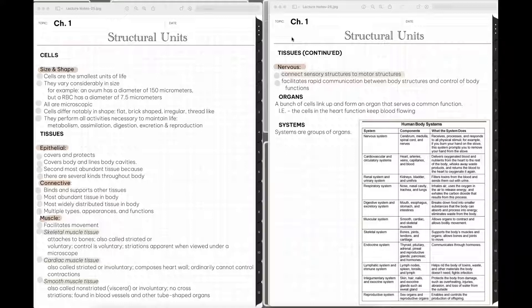Some basic information here over cells, their size and their shape. Cells, as you may remember from your high school biology class, are the smallest units of life. They do vary considerably in size. For example, an ovum, which is a female egg, has a diameter of about 150 micrometers, and the red blood cell has a diameter of about seven and a half. So pretty considerable size difference there. All cells are microscopic, so you would not ever be able to see them with a naked eye.